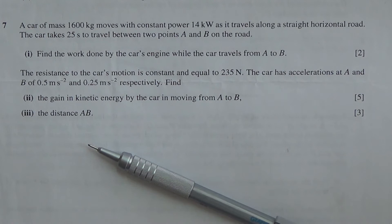Find the work done by the car's engine while the car travels from A to B, two marks. The resistance to the car's motion is constant and equal to 235 newtons. The car has acceleration at A and B of 0.5 meters per second squared and 0.25 meters per second squared respectively. Find, second part, the gain in kinetic energy by the car in moving from A to B and for the third part, the distance A to B.